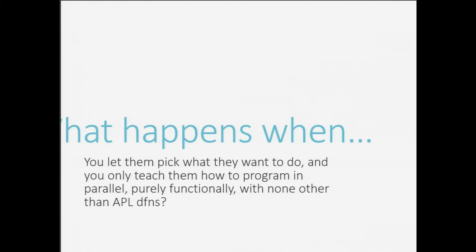What happens when you decide you're going to teach high schoolers about computer science and you've been given a blank slate by people who don't know any better? We decided to let them do whatever they want, only teach them how to parallel program — not anything about regular programming — and make sure it's purely functional. And we used none other than dfns and APL to do it.